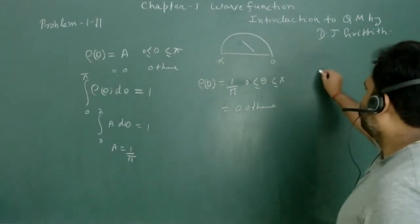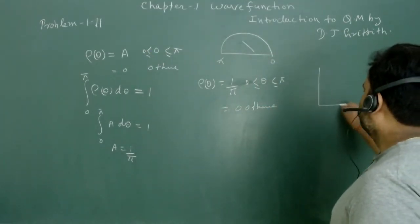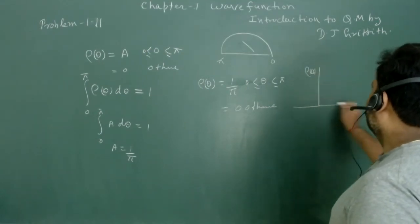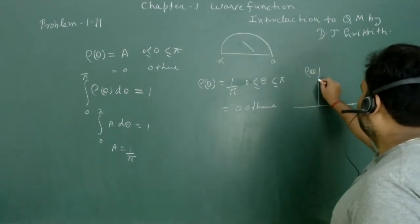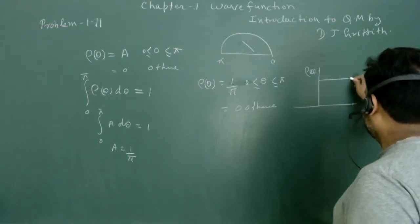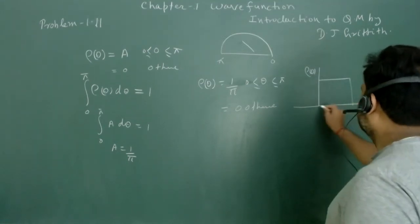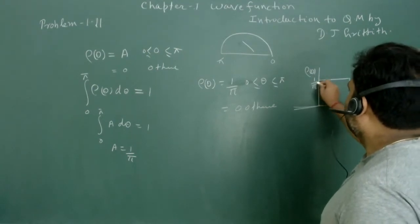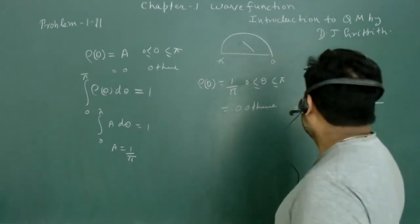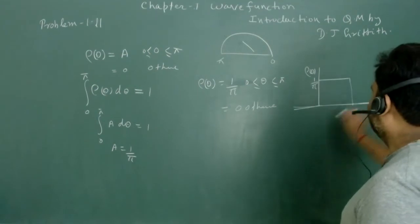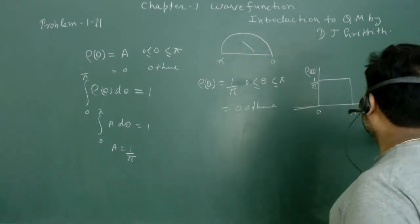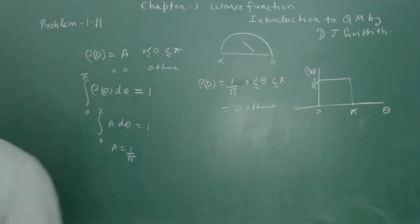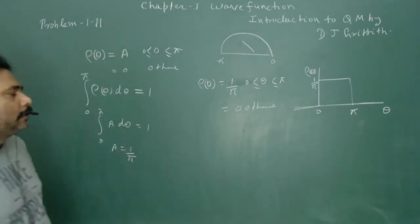If we plot ρ(θ) versus θ, we get a constant value of 1/π between 0 and π, and zero everywhere else — a uniform rectangular distribution. The horizontal axis is angle θ and this is our probability density plot.